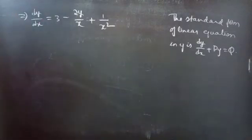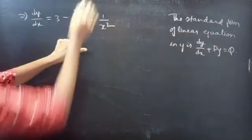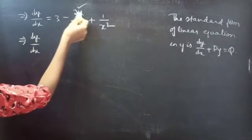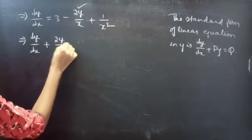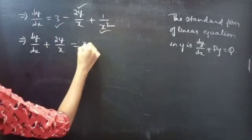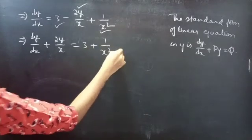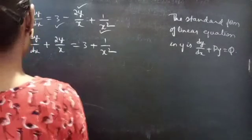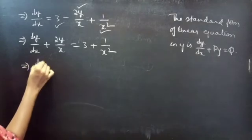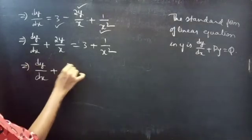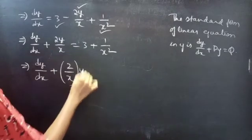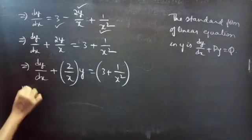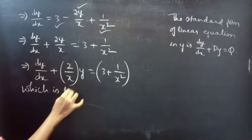Now we bring the term involving y to the left-hand side. The term minus 2y by x moves to the LHS, becoming plus 2y by x. So we get dy by dx plus 2y by x equals 3 plus 1 by x squared, which is linear in y with the coefficient of dy by dx equal to 1.